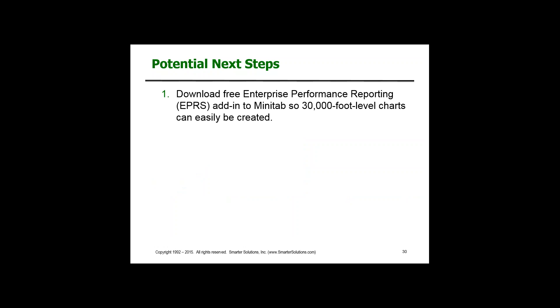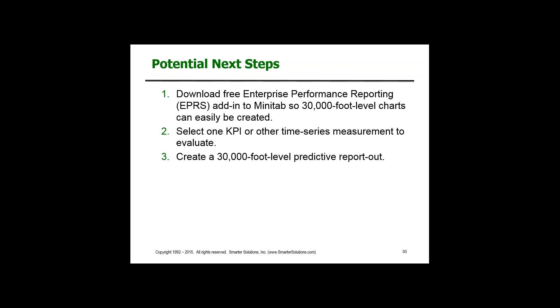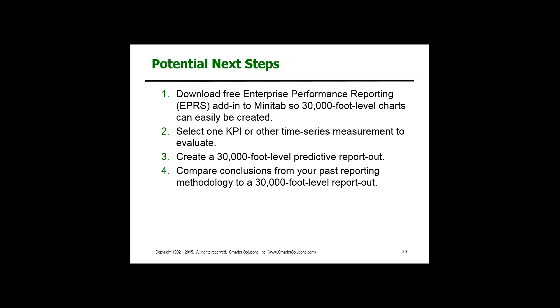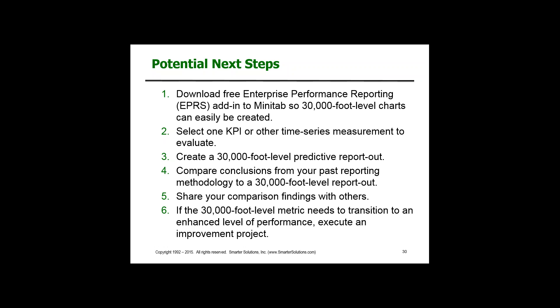How might you try this methodology out? First, download the free enterprise add-in for Minitab so you can easily create 30,000-foot-level charts. Then select one of your KPI performance indicators or other time series measurements to evaluate. Create a 30,000-foot-level chart. Compare the conclusion to the way you're currently reporting that metric. Share your comparison findings with others. Then if the 30,000-foot-level metric needs to transition to a new level of performance, this is an opportunity for an improvement project.